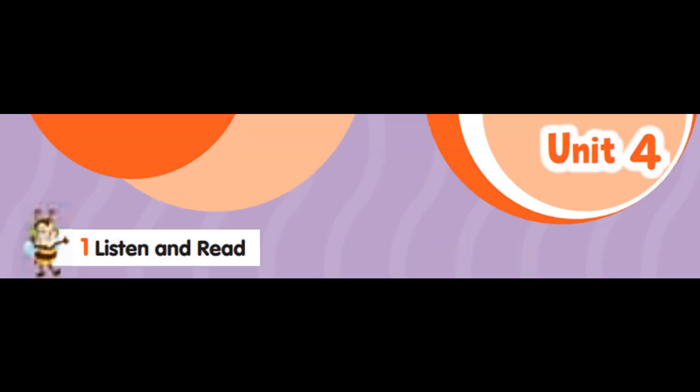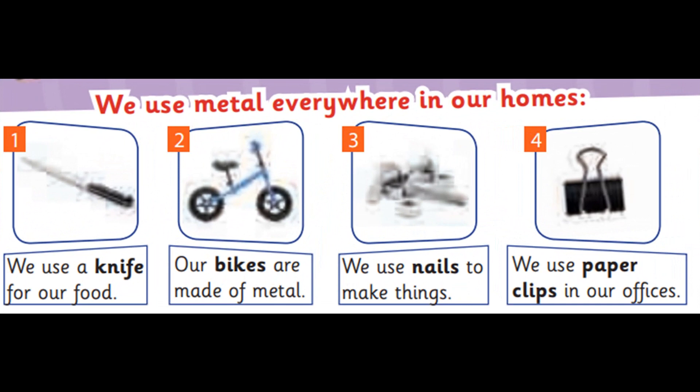Unit 4, page 67, Exercise 1. Listen and read. 1. We use a knife for our food. 2. Our bikes are made of metal. 3. We use nails to make things. 4. We use paper clips in our offices.